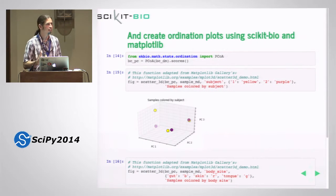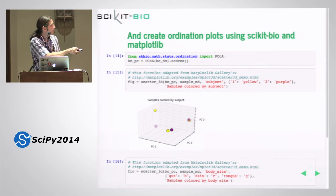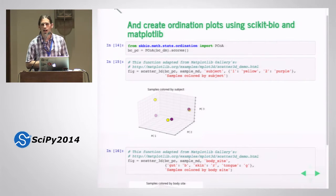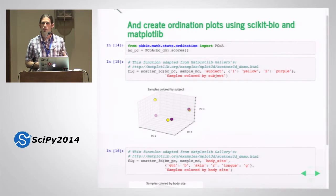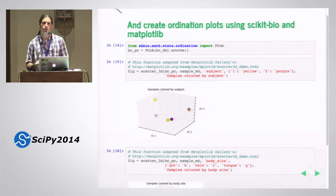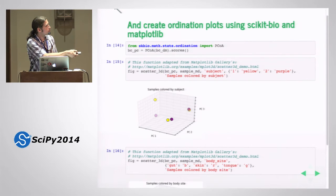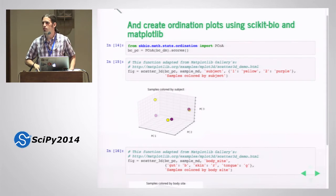What QIIME users of this workflow typically want to do next is an ordination. Using scikit-bio's principal coordinates analysis implementation, it's essentially one line of code to do an ordination. Then we pull plotting code from the matplotlib gallery to quickly get a 3D principal coordinates plot. Each point represents a sample, colored by the subject it was derived from. Based on this plot it looks like the answer to our question is no — samples from the same subject are not more similar to each other. Subject 1 is in purple, subject 2 is in yellow, and you can see purple and yellow are clustering together, so we don't see the samples clustering by subject.